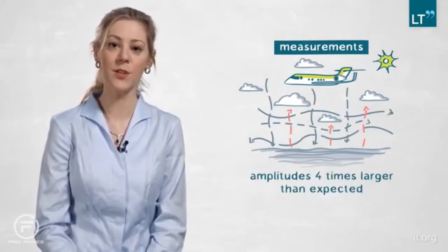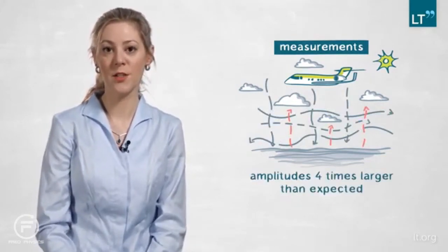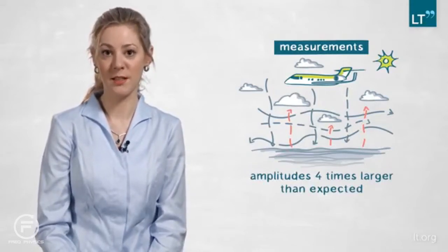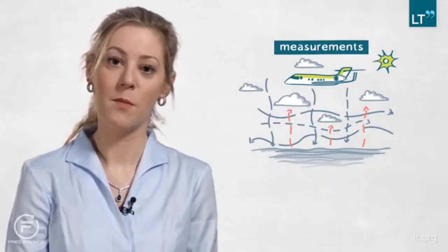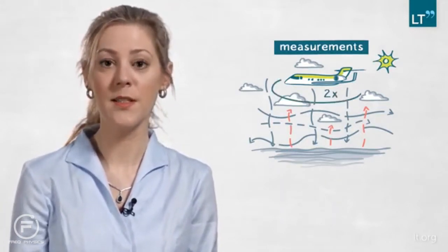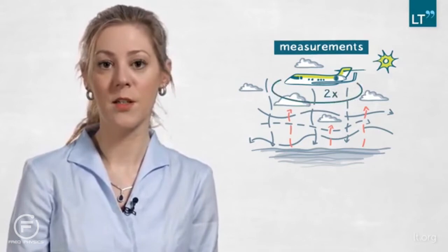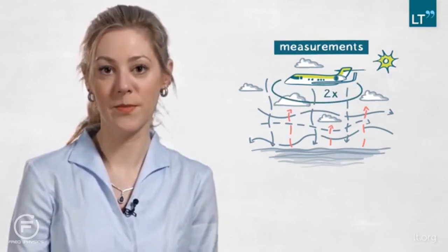Also, the amplitudes were four times larger than what one would expect based on the budget analysis. And at first they thought that this was noise, but they flew each circle twice, and so one hour later they obtained almost the same result. This clearly showed that the measurements were not picking up noise, rather these patterns in divergence persisted for more than one hour.